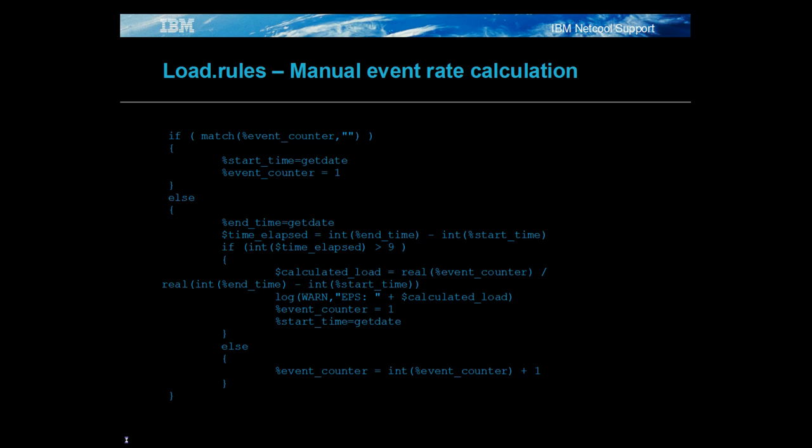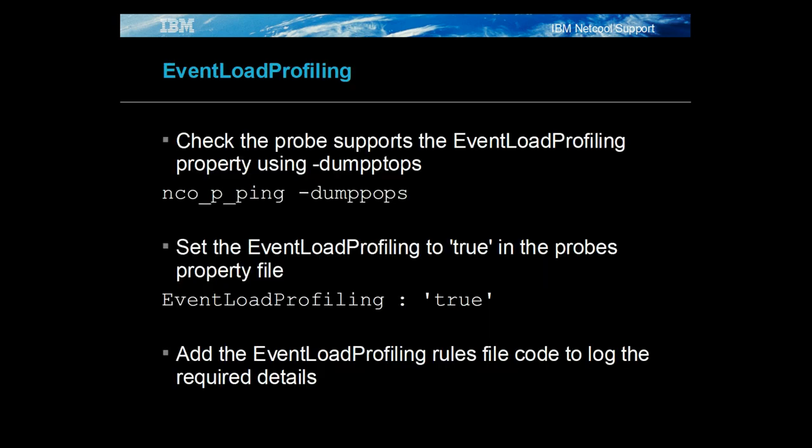The load rules uses the maths functions available in the probe rules to manually calculate the event rate per period based on data stored in static variables. Unlike OPL stats rules, the logging of events per second happens when events are being created rather than periodically. Additional information can be logged, such as the number of events and elapsed time if required.